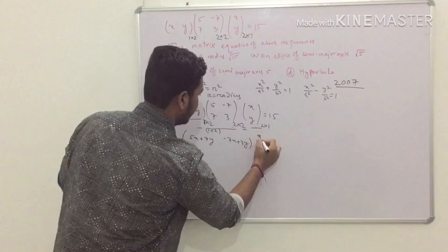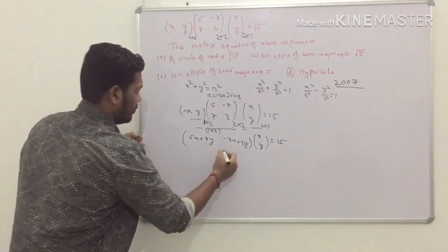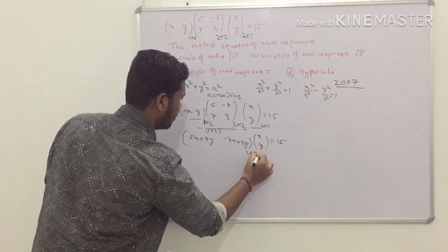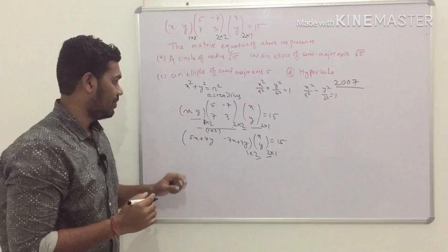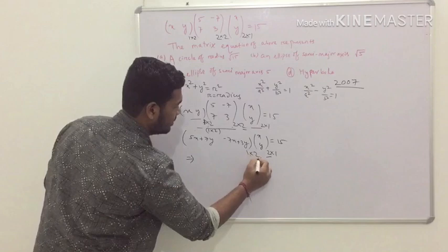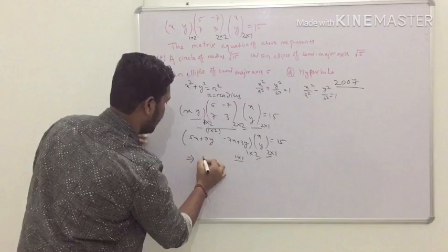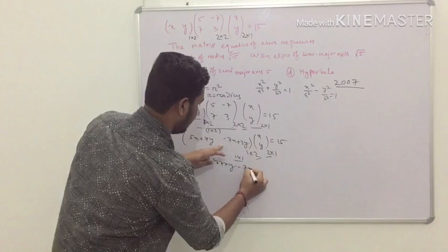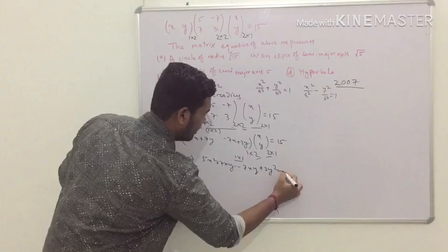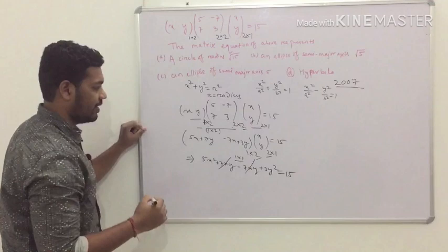Then multiply this 1×2 resultant matrix with the third matrix of order 2×1. The column of the first matrix must equal the row of the second — this is the rule of matrix multiplication. The result is a 1×1 matrix: (5x + 7y)·x + (−7x + 3y)·y = 5x² + 7xy − 7xy + 3y². The +7xy and −7xy cancel, giving 5x² + 3y² = 15.